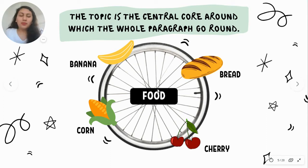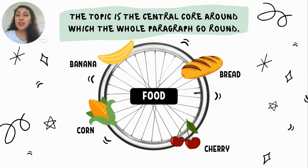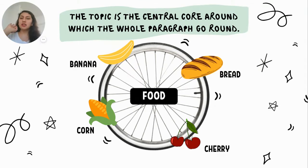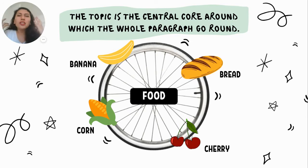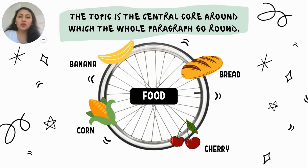For example, let's suppose that in a paragraph I have a sentence about a banana, then a sentence about bread, and a sentence about corn and another one about cherry. What is going to be the topic? What is it about? We're talking about food, right? So that is the topic.